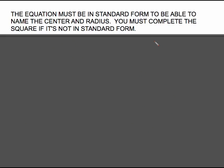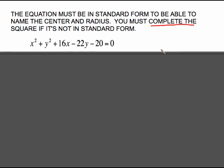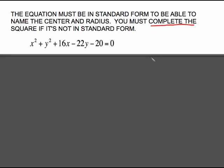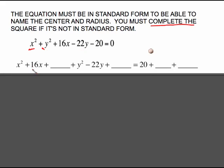Previous examples were all in standard form, which made it very easy to name the center and the radius. But oftentimes the equation is not in standard form. If it's not in standard form, you must complete the square to put it in standard form. So you organize it to get ready: get your x stuff together, put plus blank; get your y stuff together, put plus blank; and take the plain old number and add 20 to both sides, which effectively just moves the 20 to the other side.